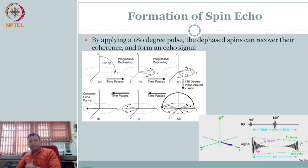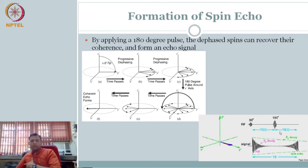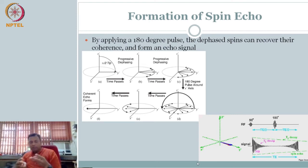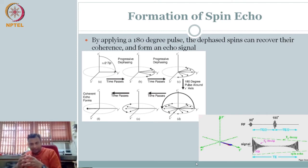You get an echo of the signal, so there are timings involved — this is the time to echo (TE). T2 relaxation times are material properties. But notice the time to echo is under your control — you know when you want to apply the excitation pulse, so you are applying the time to echo. This timing is also under your control. The whole beauty of MRI is you have multiple parameters inherent to material property, and you can manipulate what you want to get of the material by changing the sequence in which you apply the RF excitation pulse.